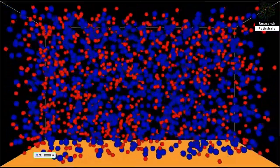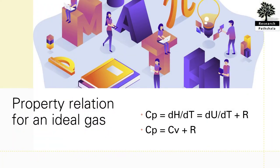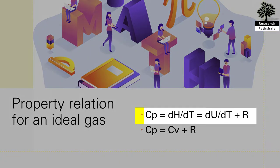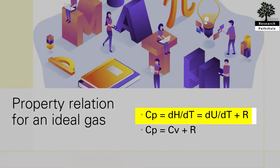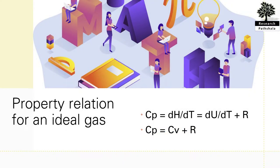Implied property relations for ideal gases are given as follows: Cp = dH/dT = dU/dT + R. We can say that Cp = Cv + R. This equation does not imply that Cp and Cv are themselves constant for an ideal gas, but only that they vary with temperature in such a way that their difference is equal to R.